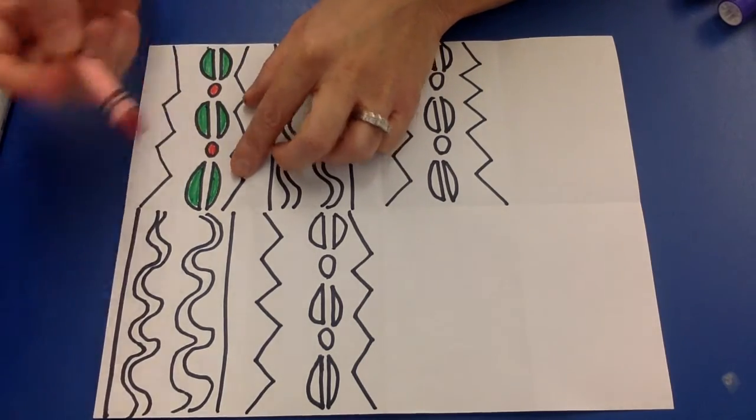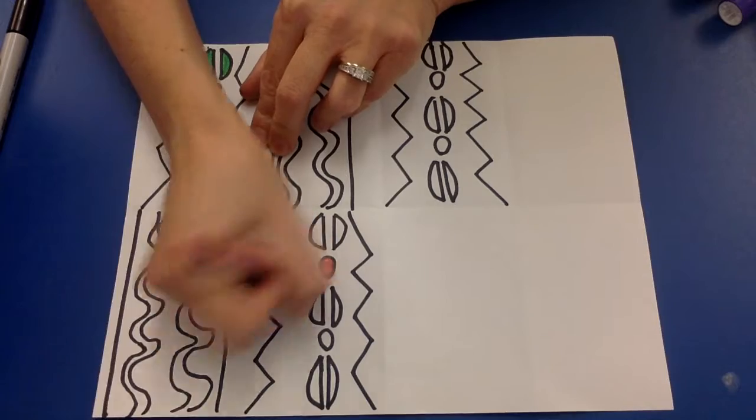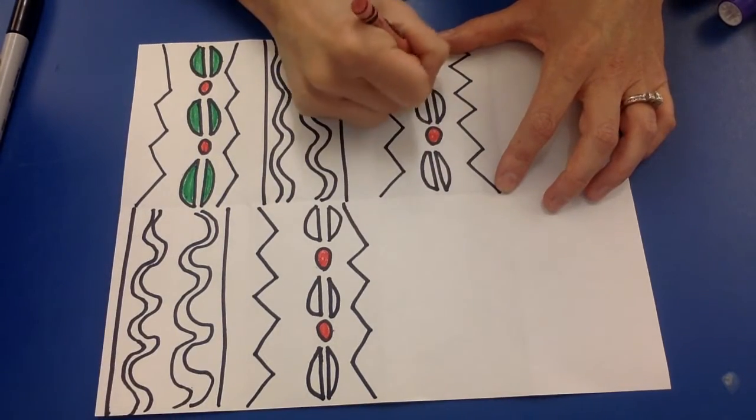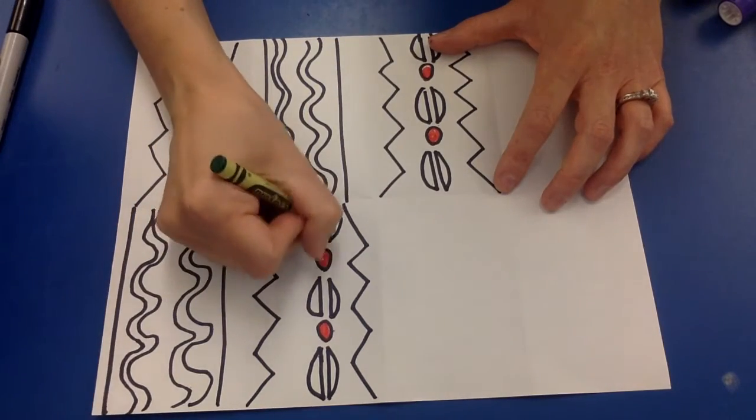Notice I did these dots red, so all the dots are going to be red. Coffee beans will all be green.